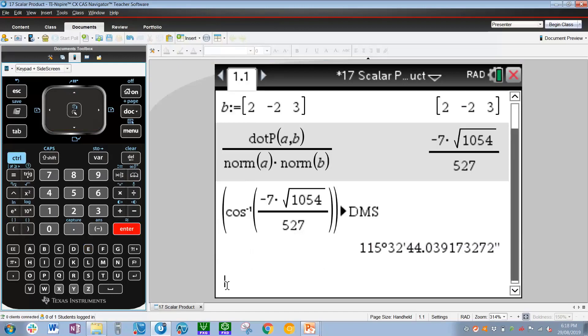There we go. So the angle between the two given vectors, correct to the nearest minute, is 115 degrees and 33 minutes. So 44 is more than 30, therefore it rounds up 32 minutes to 33 minutes.